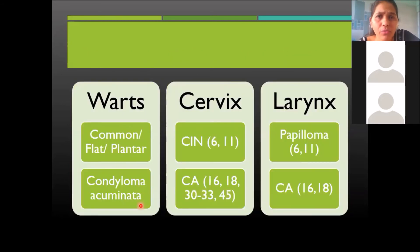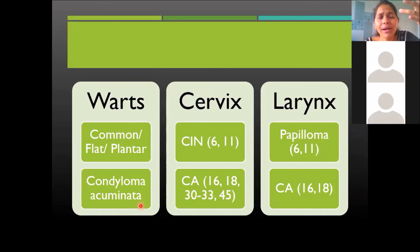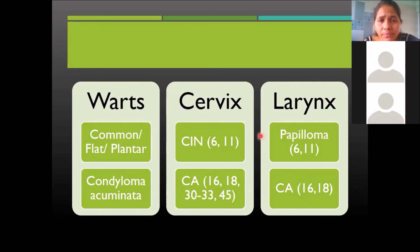Papillomavirus causes common warts, plantar warts, and flat warts depending on morphology. An important clinical condition is Condyloma Acuminata — anogenital warts. Do not confuse this with Condylomata Lata, which occurs in secondary syphilis where spirochetes travel through the bloodstream. In the cervix and larynx, HPV leads to benign lesions such as Cervical Intraepithelial Neoplasia, caused by strains 6 and 11.